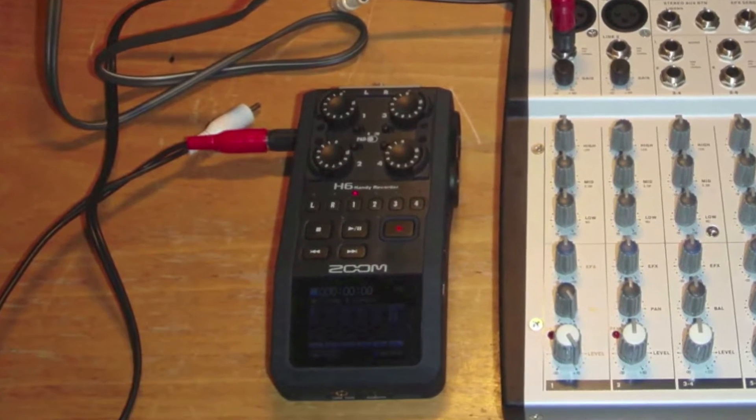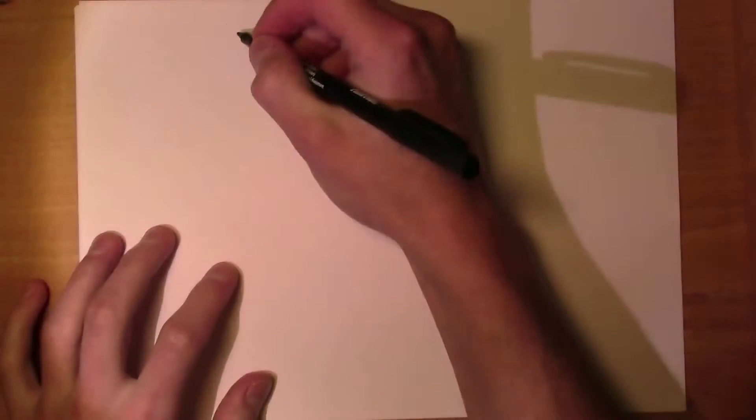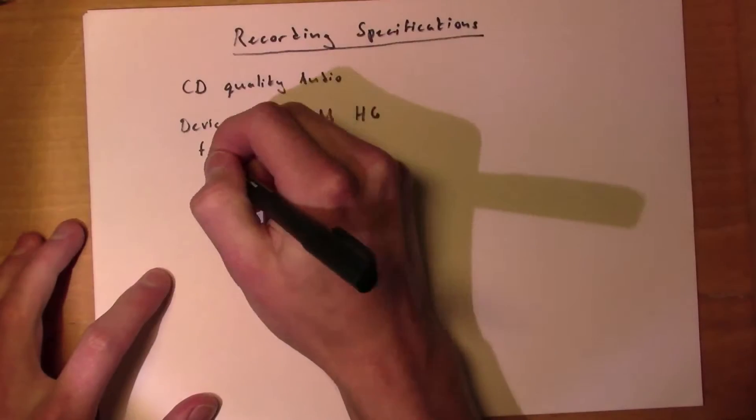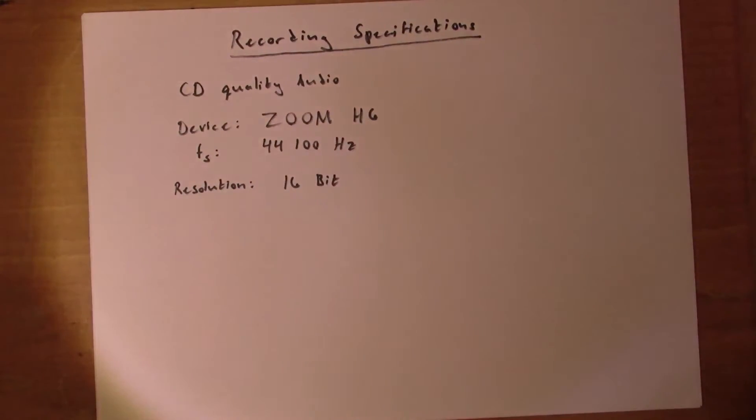First, let's take a look at the specifications used for the recordings in this experiment. The specifications are the same as that of a conventional CD recording. The sample frequency is 44,100 Hz and the resolution is 16 bits.